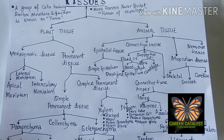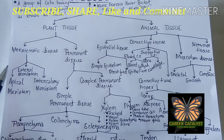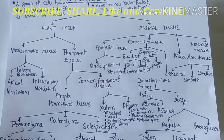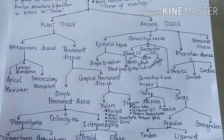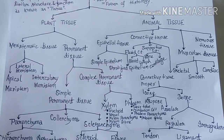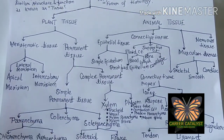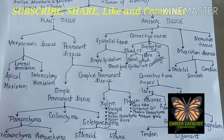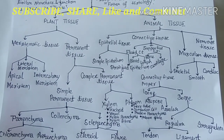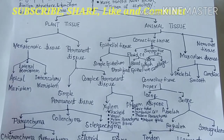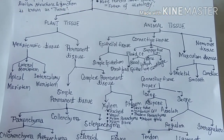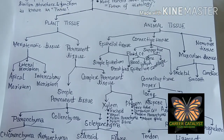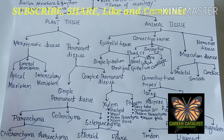After meristematic tissue, the other category of plant tissue is permanent tissue. Permanent tissue is of two types: simple permanent tissue and complex permanent tissue.